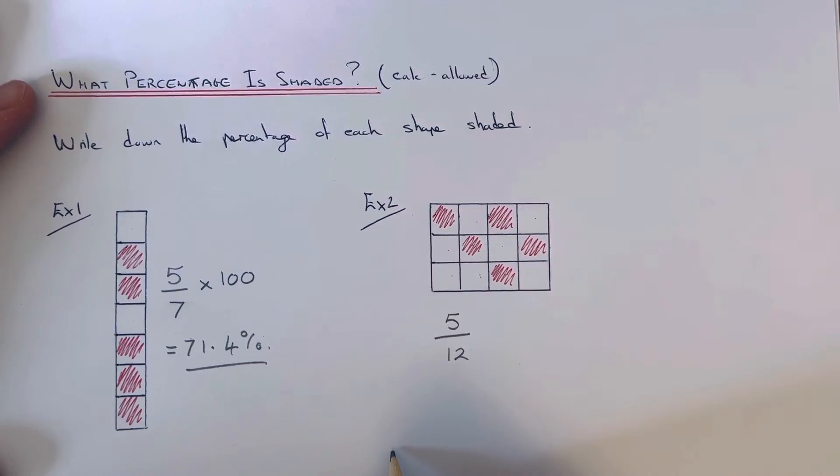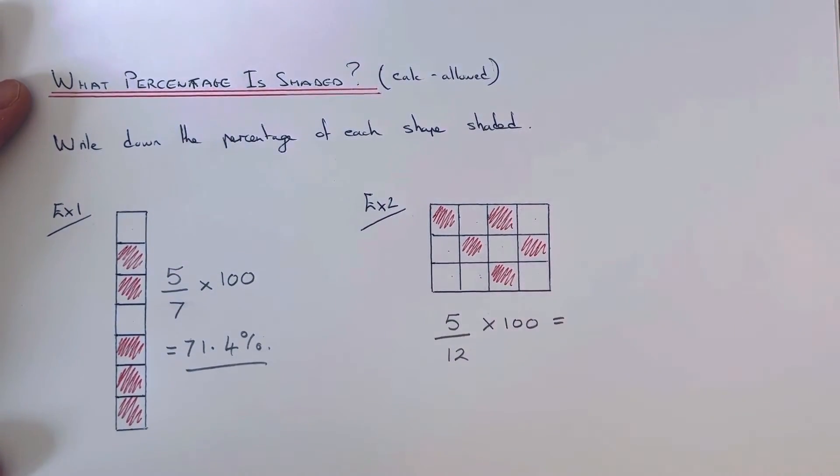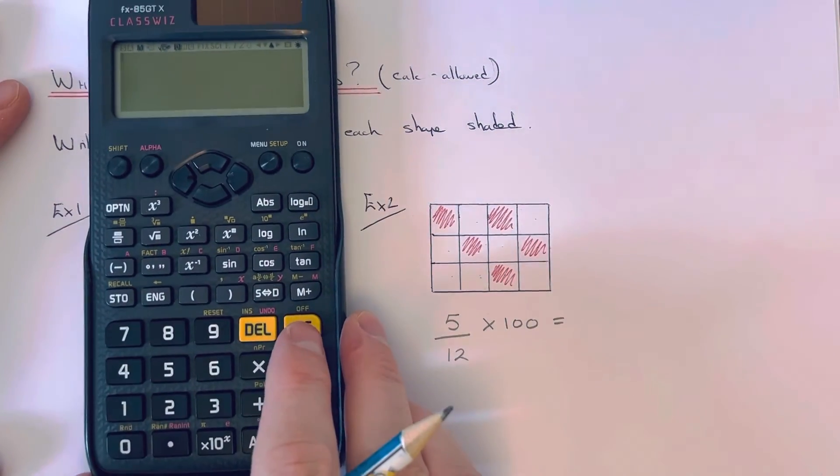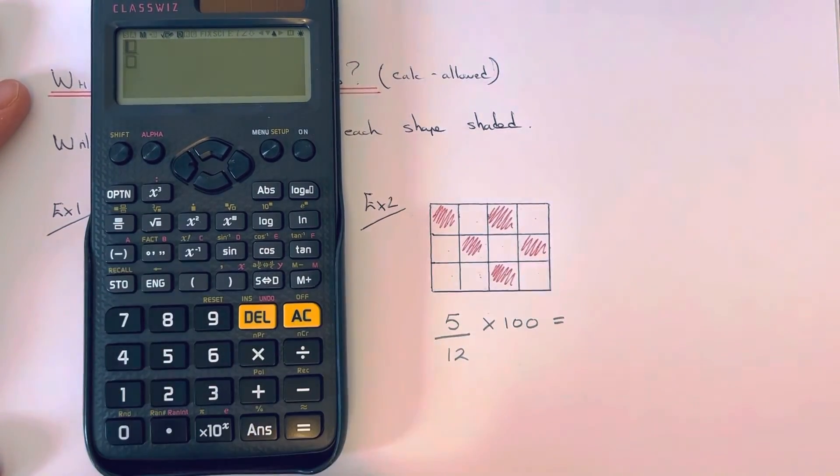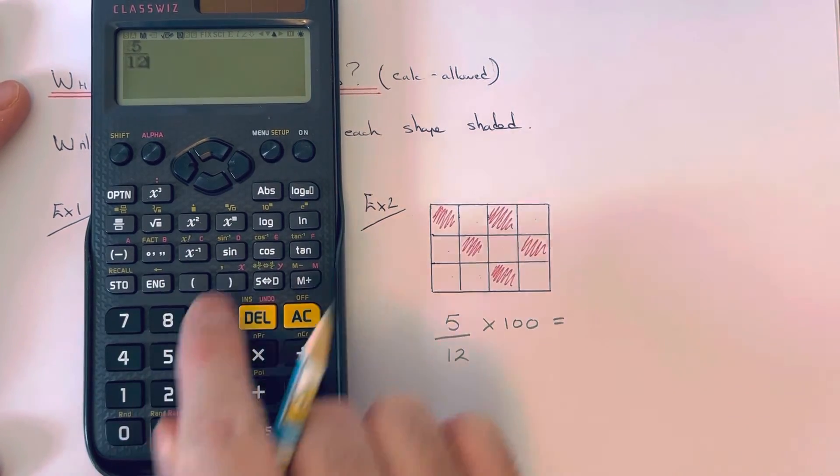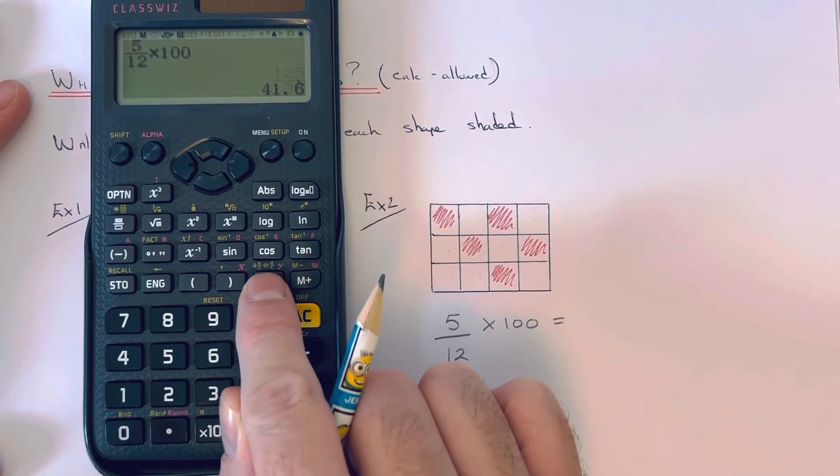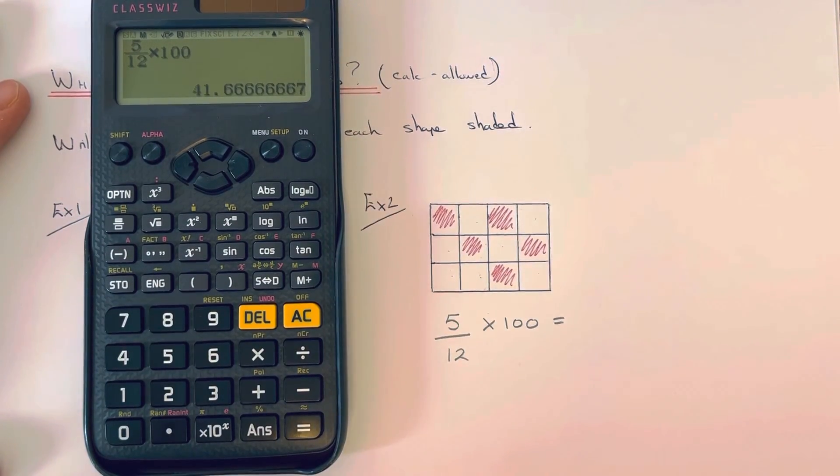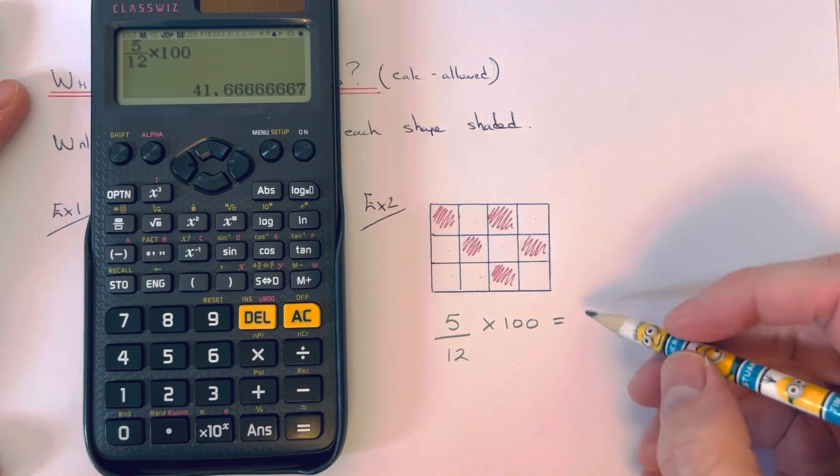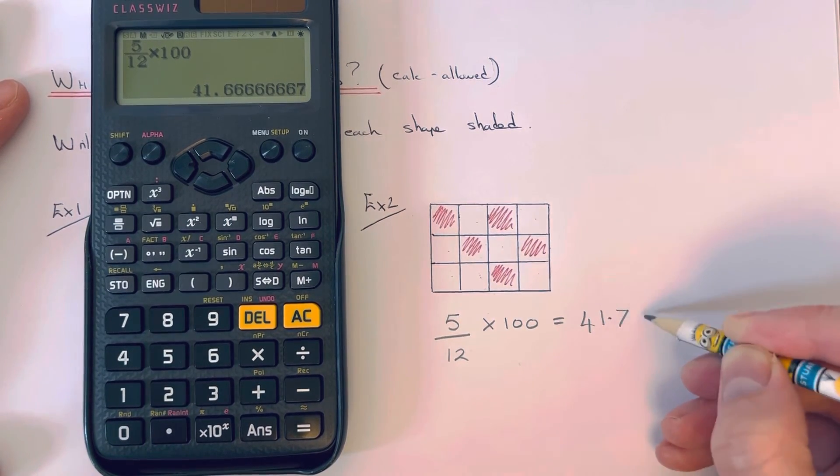And then we just need to multiply this fraction by 100 to convert it to a percentage. So again, let me use the fraction key. So it's 5 over 12 times 100. So again, I'm going to round it off to one decimal place. So it's 41.7%.